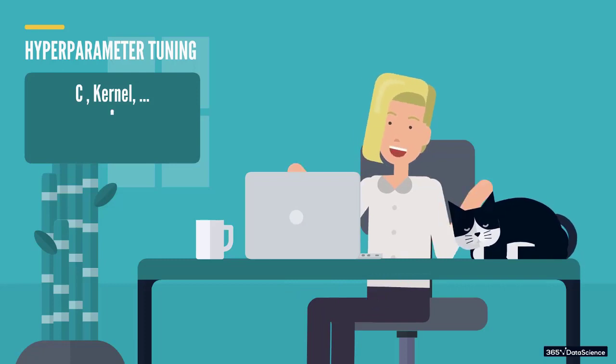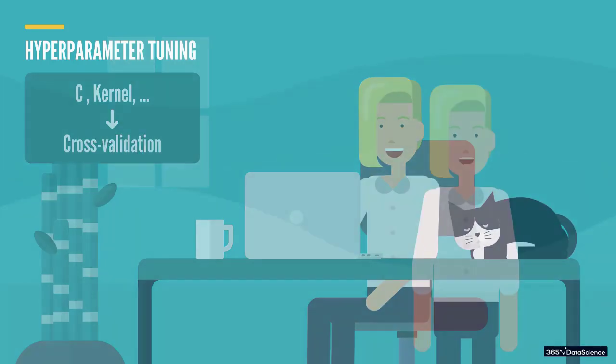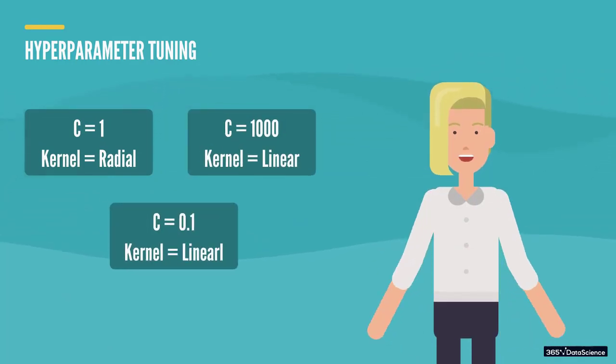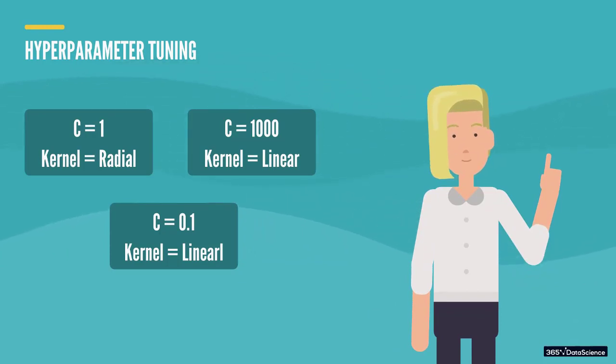In practice, this is almost always done using cross-validation. What we do is test out different sets of values for each parameter and then compare their performance on the trained sets using cross-validation. Once again, the reason for using different training data sets is to avoid picking up bias.